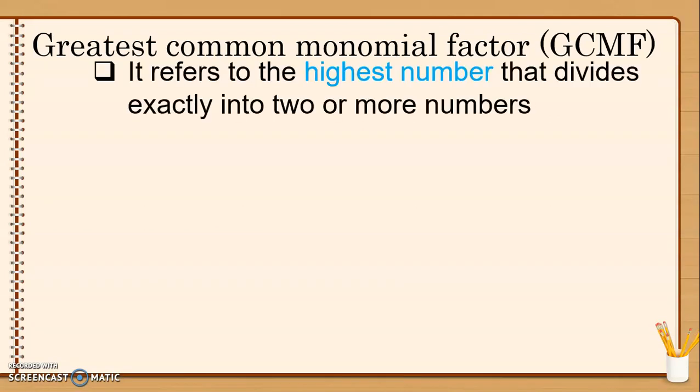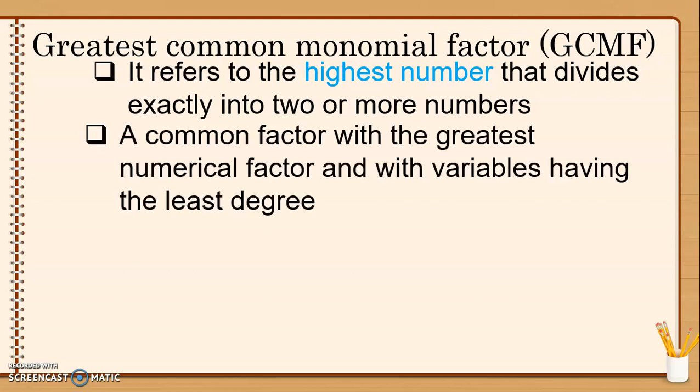A greatest common monomial factor refers to the highest number — yung highest number na makapag-divide doon sa dalawa or tatlong numbers. It is a common factor with the greatest numerical factor and with variables having the least degree. So, it can be a numerical factor that can divide, and it has the lowest degree of variable.